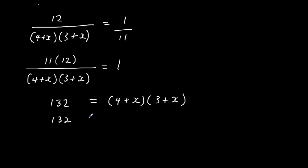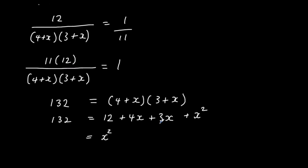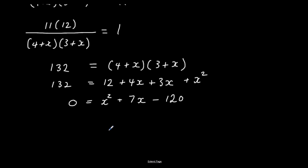Now I expand the brackets: 4 × 3 = 12, 4 × x = 4x, 3 × x = 3x, and x × x = x². Writing the x² term first gives x² + 4x + 3x = x² + 7x + 12. Subtracting 132 from both sides: 12 − 132 = −120.